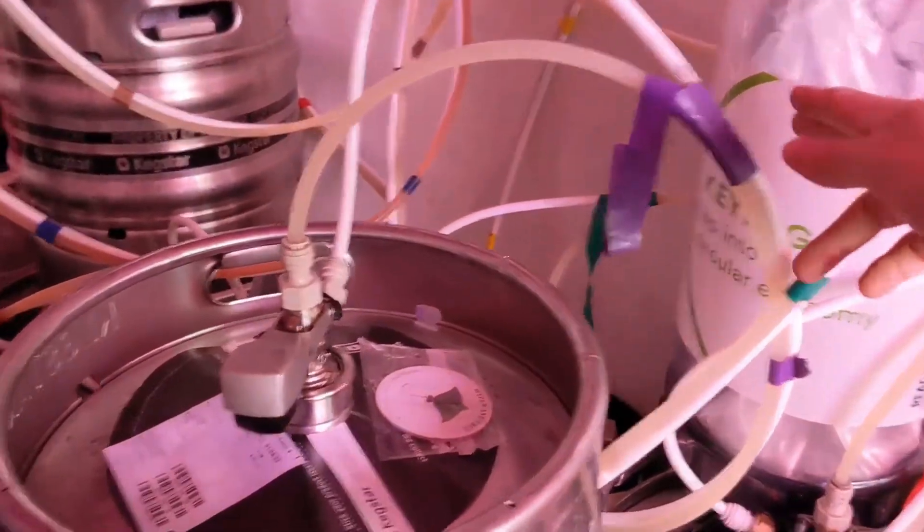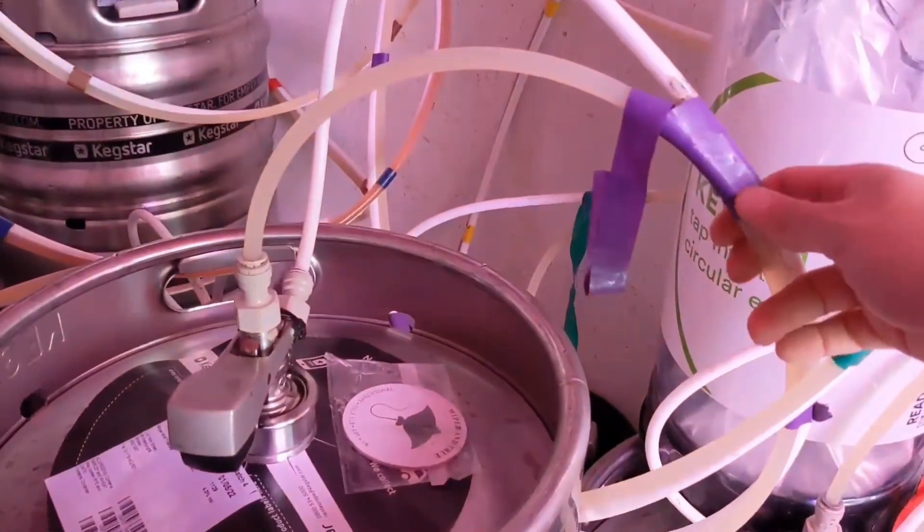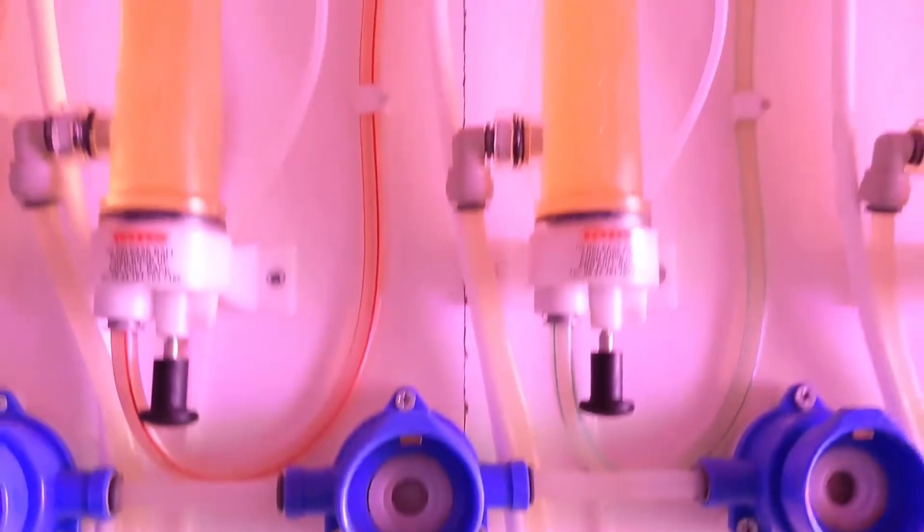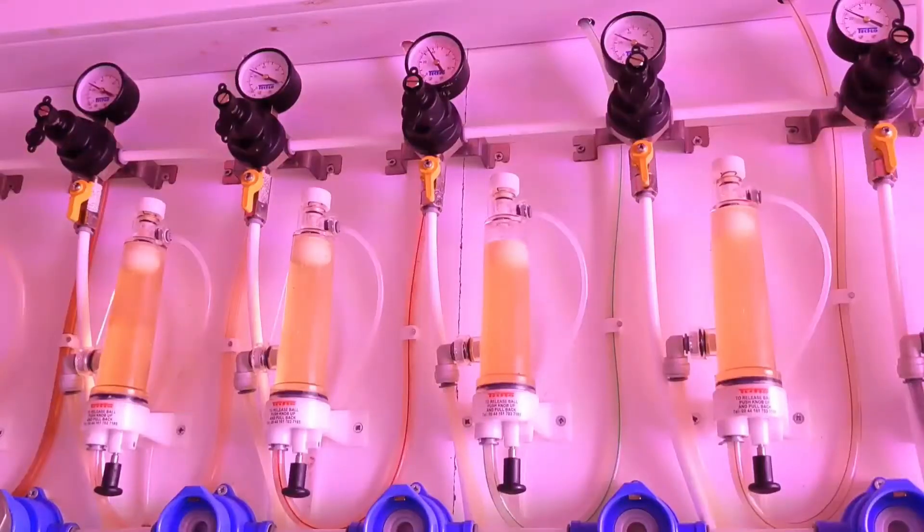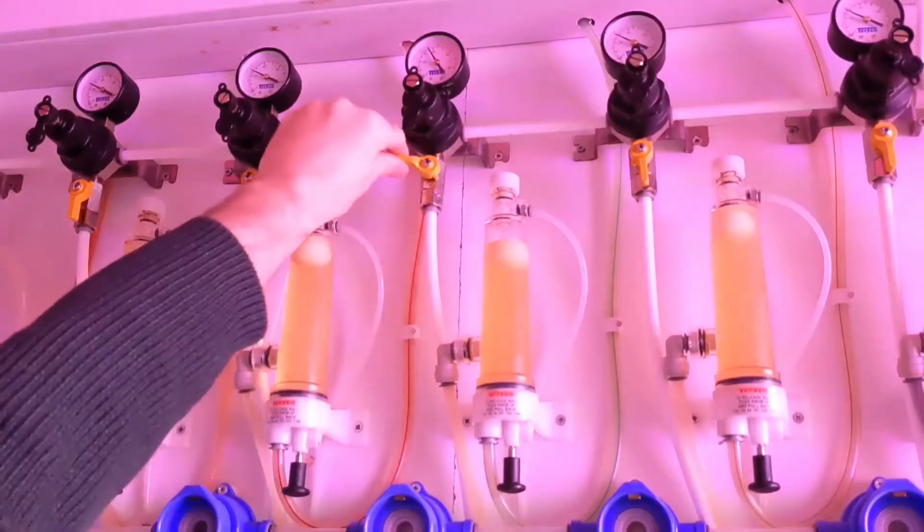To start the beer cleaning process, you're going to want to identify the correct line to disconnect. Turn off the gas for the specific line.